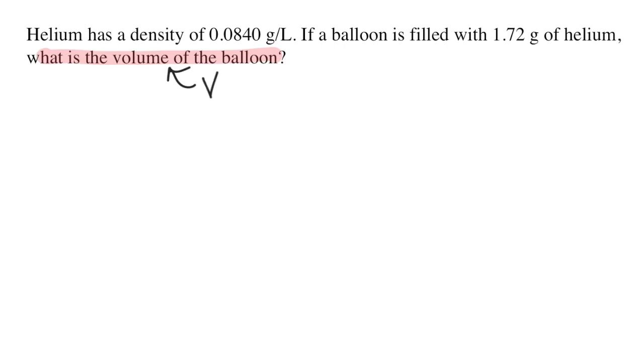Next, I'm going to use green to highlight the given information. It says that helium has a density of 0.0840 grams per liter. The symbol for density is d. And the mass is 1.72 grams. The symbol for mass is m.